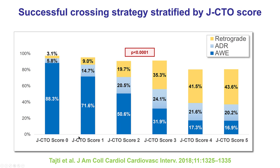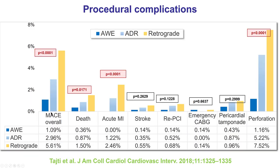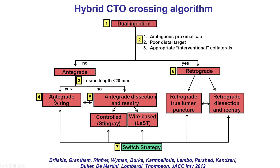The more complex the CTO, as illustrated by a higher JCTO score, the higher the need for using advanced crossing techniques such as retrograde and antegrade dissection and reentry. However, this comes at a cost, since ADR and retrograde do have higher risk of complications. So how can we balance the need for achieving high success while minimizing the risk of complications? This is done by using CTO crossing algorithms.